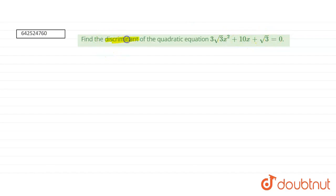We have to find the discriminant. So, we have the quadratic equation 3 root 3 x square plus 10 x plus root 3 equals 0. If we compare this equation with the general form of quadratic equation that is ax square plus bx plus c equals 0.